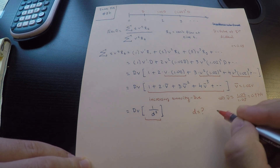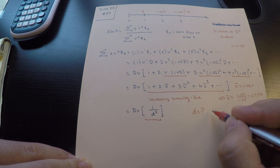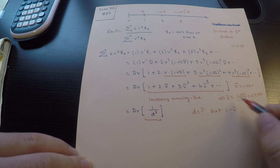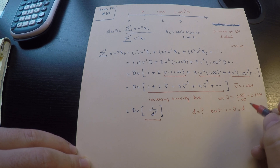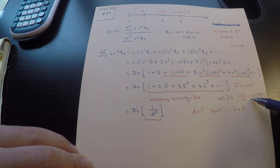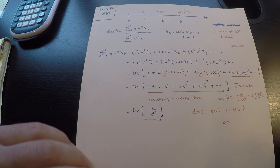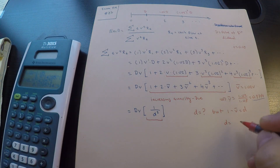The discount rate d satisfies d = 1 minus V-bar. We computed V-bar as 0.9714, so d equals 1 minus 0.9714, which gives d equals 0.02857. We'll need this value shortly.